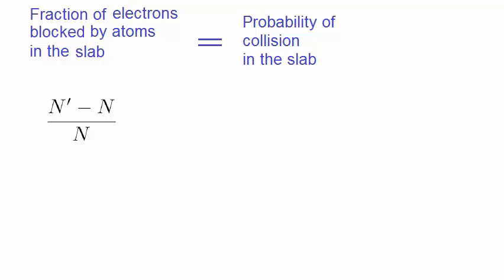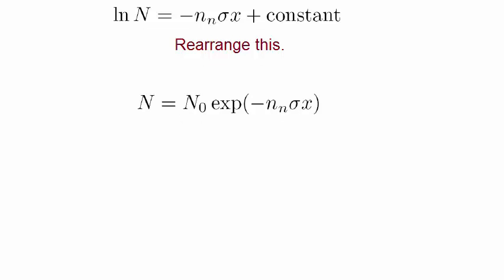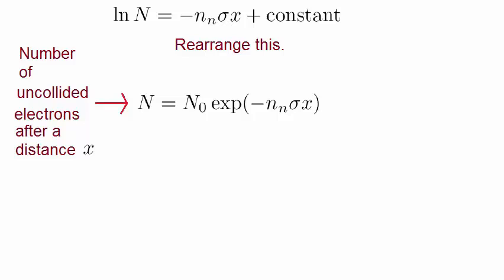Because it's an infinitesimally thin plasma, then the difference between n' and n becomes dn. Notice that there is a minus sign at the front, because n' will always be less than n. We now equate this to the probability of a collision that we derived previously, and we now integrate this equation. Rearranging this, we get this expression. What does this expression mean? n, on the left-hand side, is the number of electrons that are left without a collision after they travel a distance x through the plasma. n0 is the initial number of electrons.